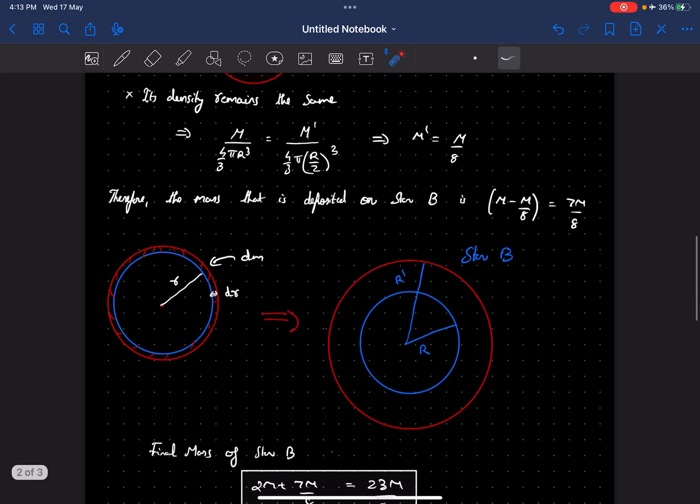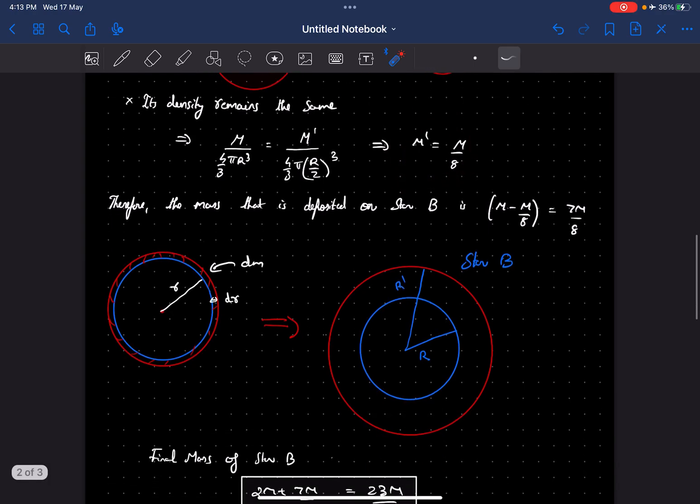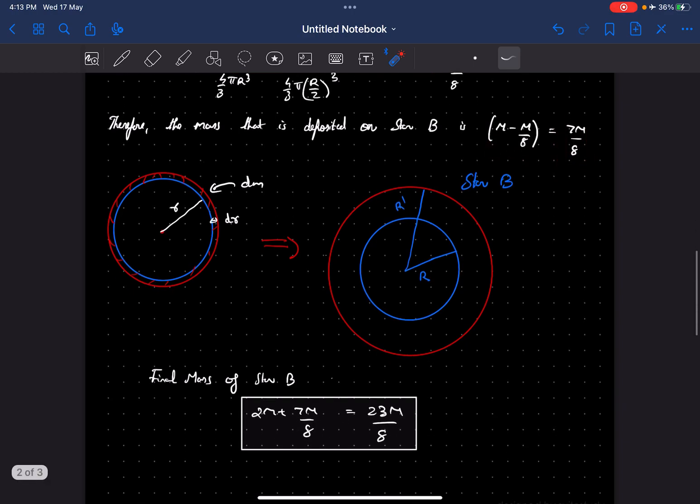Now if the final mass of planet A is m by 8, it means m minus m by 8, that is 7m by 8 mass, is deposited onto planet B.